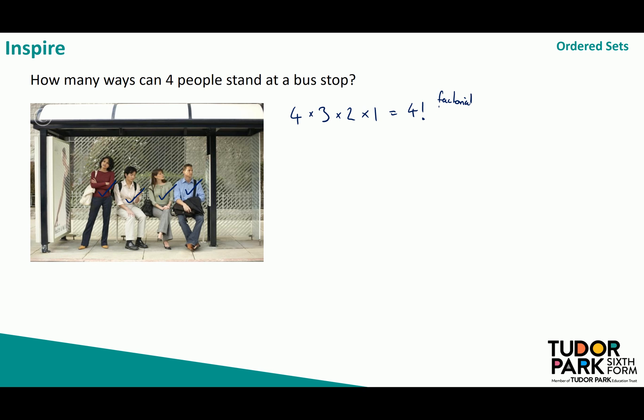So this exclamation point at the end is read as factorial. If I was to write down five factorial we would understand that to mean five times four times three times two times one.